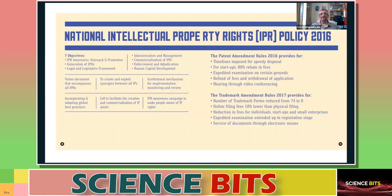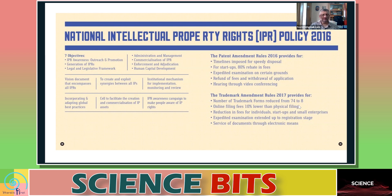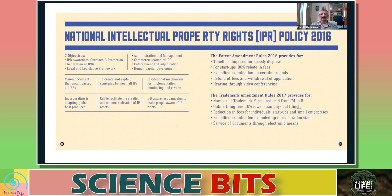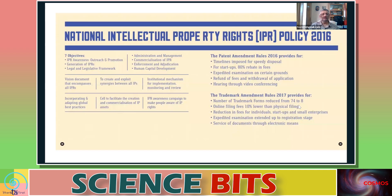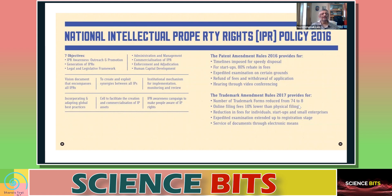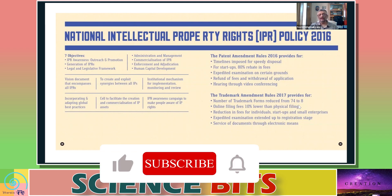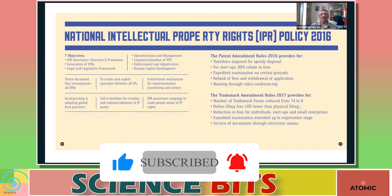The National Intellectual Property Rights Policy of 2016 firstly wanted to create awareness on IPR, because the government felt that in India there is not adequate awareness about creating IPR. People do make creative products but they don't register them, which essentially means they can be exploited and the person who created it — or the country and the economy — is not benefited. So one objective is to create awareness, generate IPR, and also provide legal and legislative frameworks, administration and management, and commercialization of IPR.